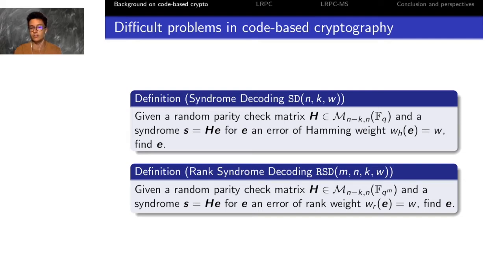So the syndrome decoding is for the Hamming weight and there is an equivalent for the rank metric which is called the rank syndrome decoding.